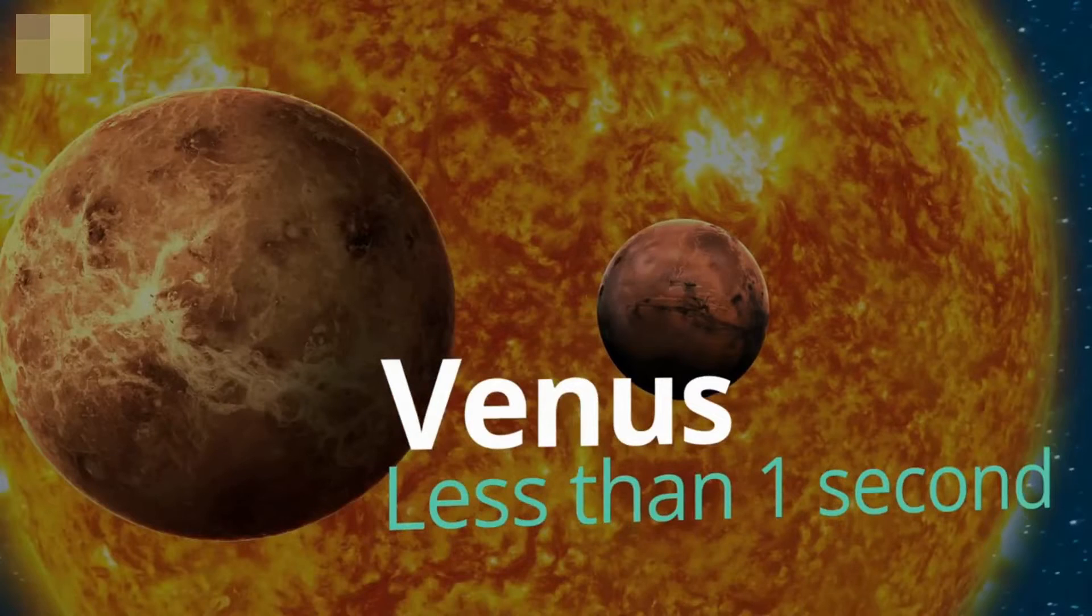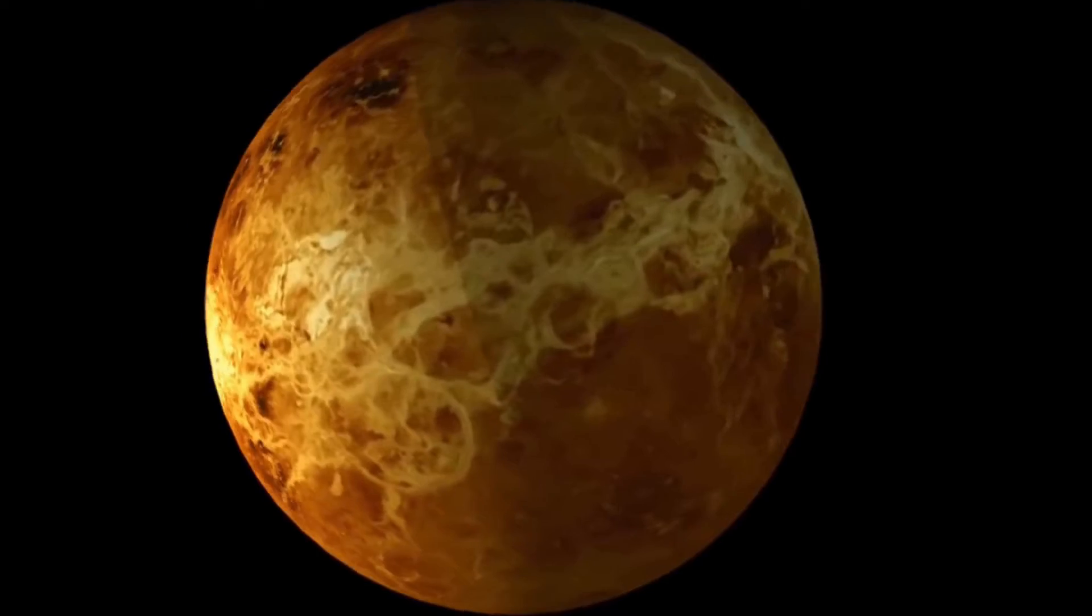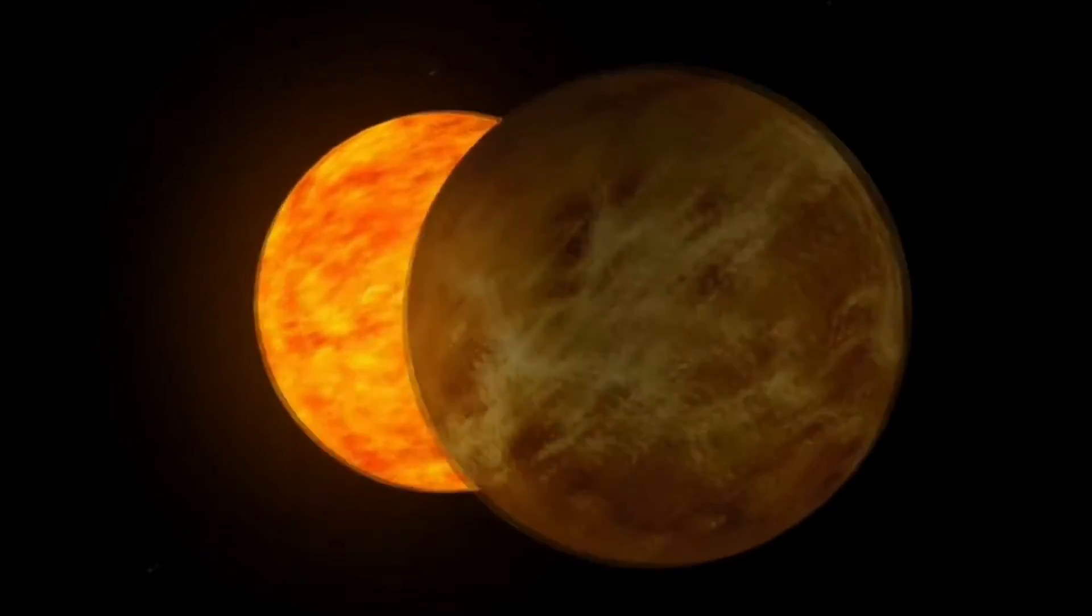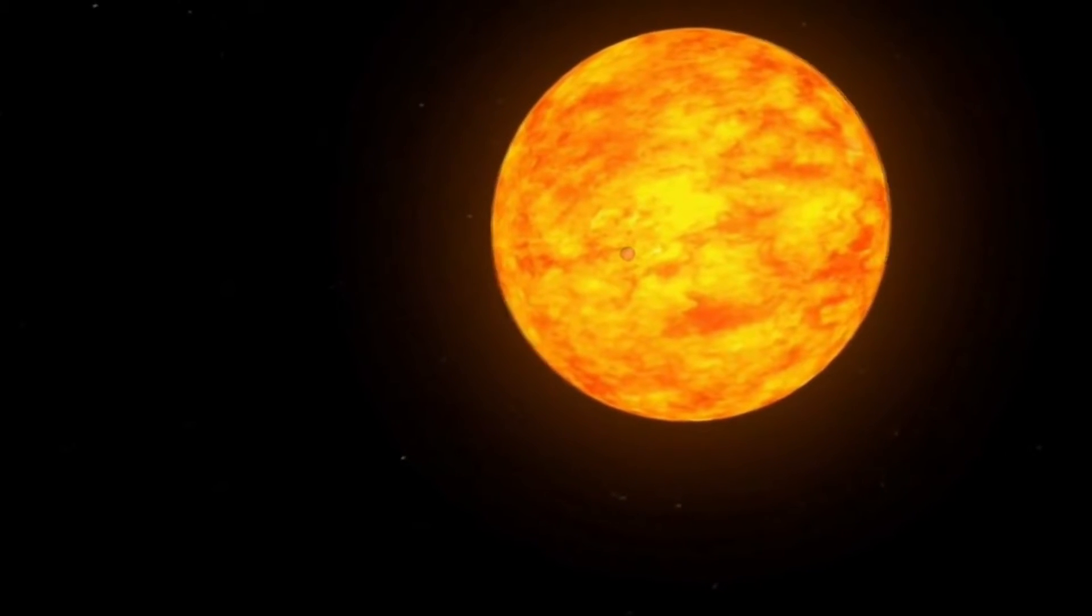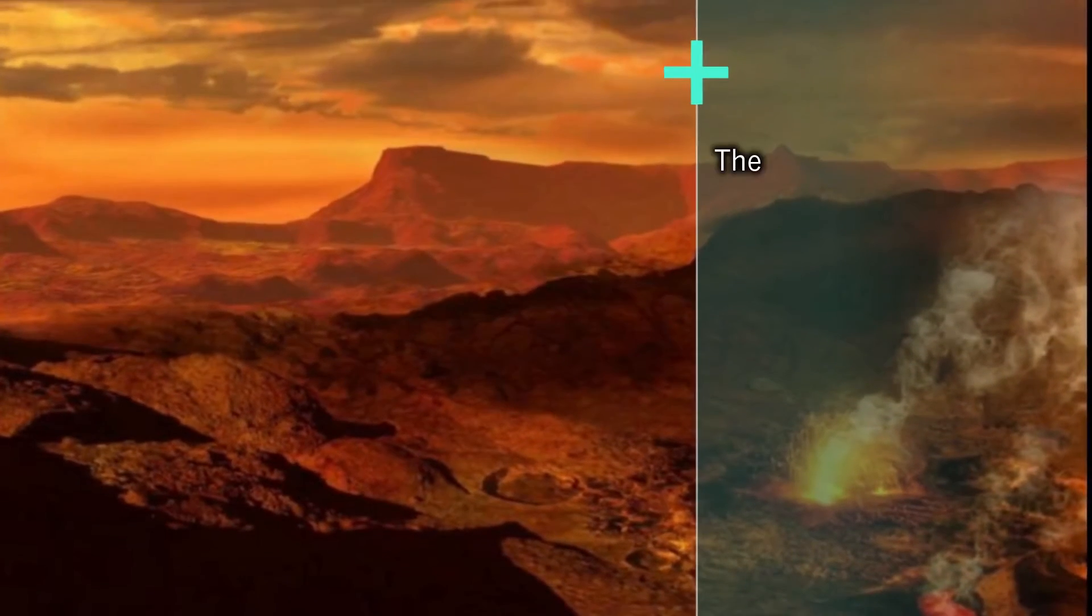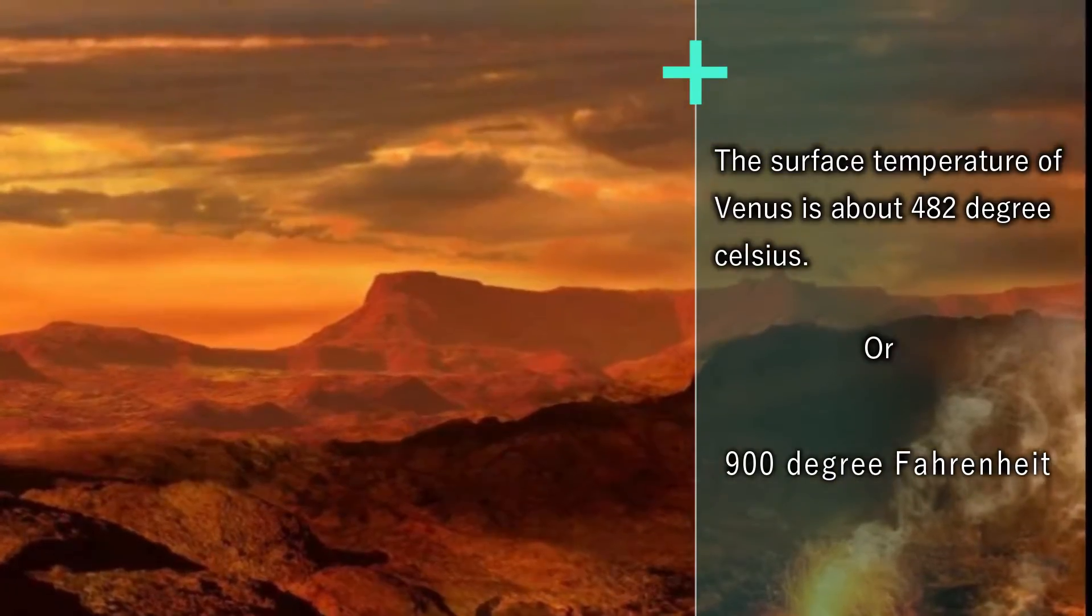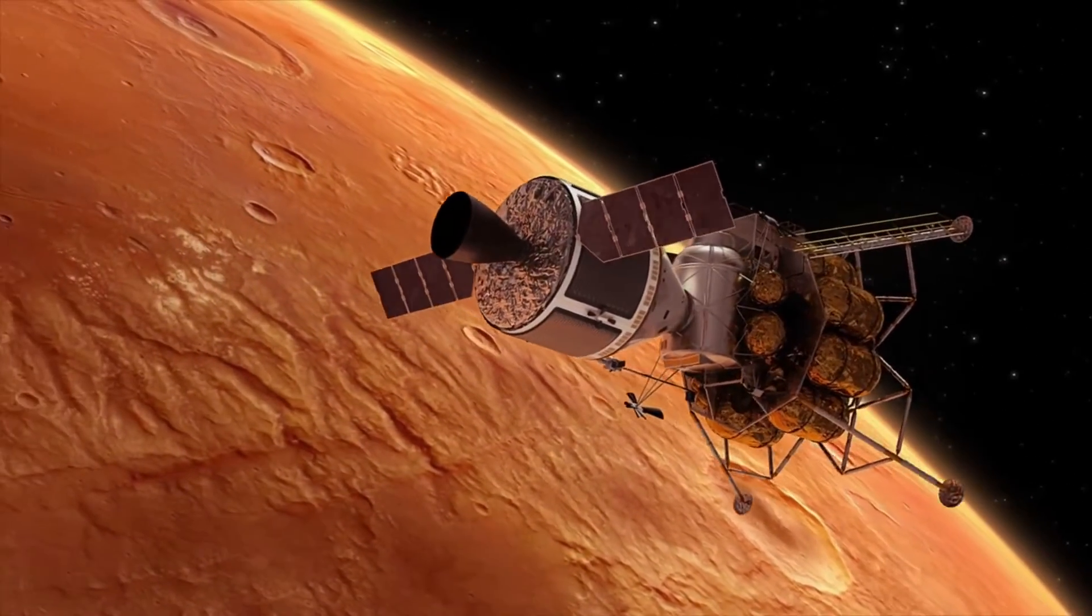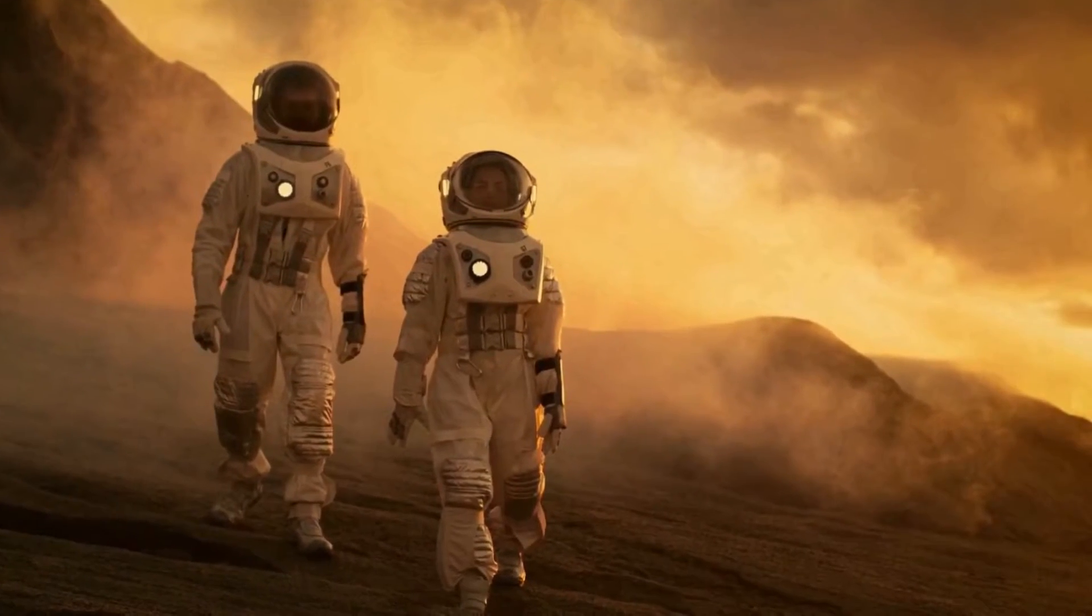Venus: less than 1 second. At 482 degrees Celsius, you already know this one isn't going to be pretty. Being the hottest planet in our solar system, this is really a bad place to visit. By the way, Venus has about the same gravity as Earth, so you'd be very familiar walking around until you vaporize.